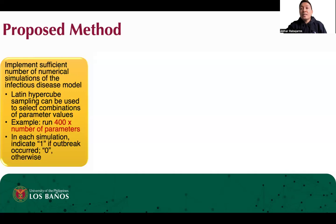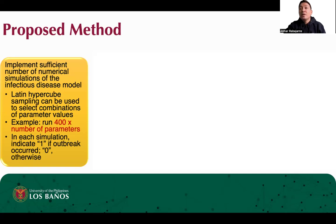To discuss our method in detail, here are our proposed steps. First, implement a sufficient number of numerical simulations of the infectious disease model — for example, 400 times the number of parameters. We can use Latin hypercube sampling to select combinations of parameter values. In each simulation, we need to categorize the combination of parameter values as 1 if an outbreak occurred or 0 otherwise.